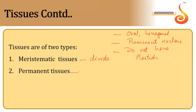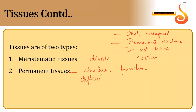Permanent tissues are those which have taken up a defined structure and function. We call this process differentiation. Permanent tissues have originated from meristematic tissues.